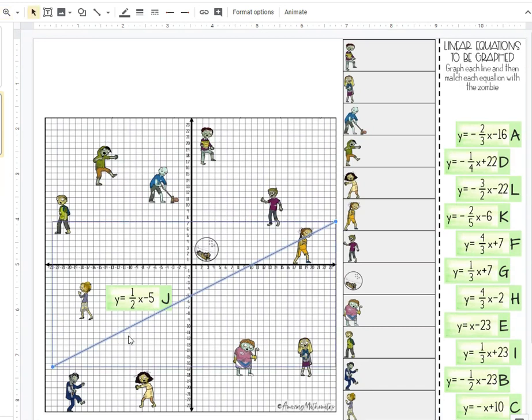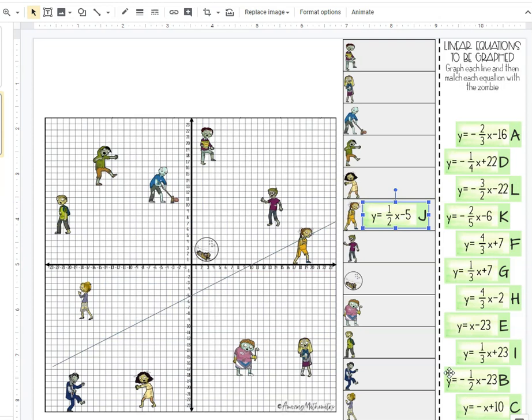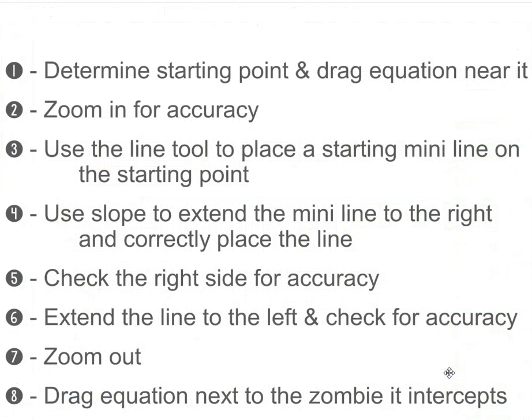Press escape to get out of that zoom tool and we see that line J got this zombie right here, so we're going to pull our line over here. You've now successfully got your first zombie and graphed your first linear equation. Have fun getting zombies and good luck with the activity today!